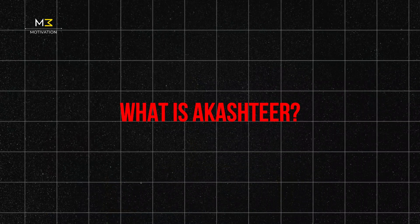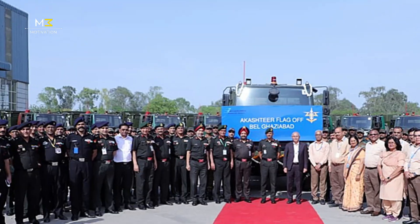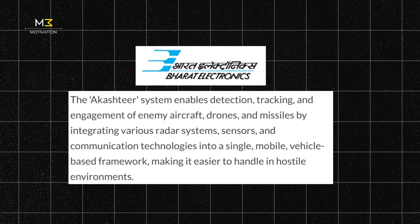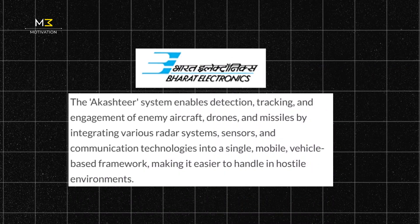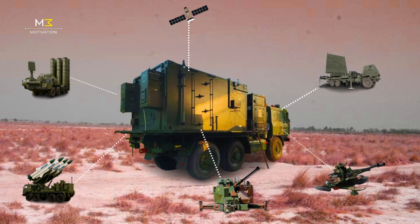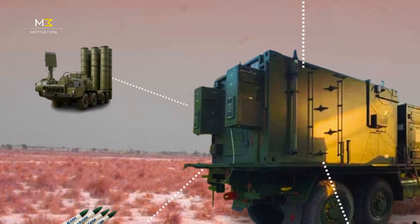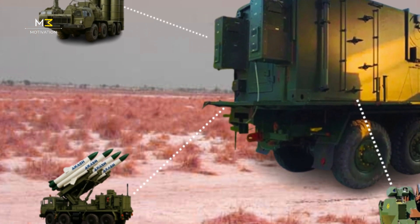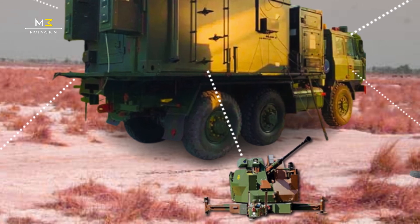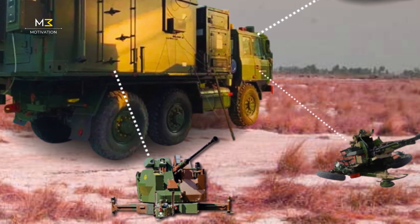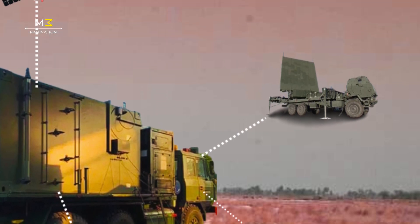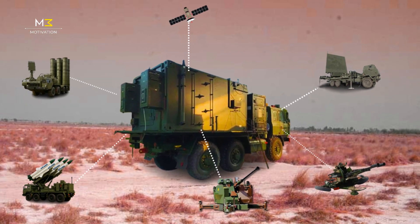What is Akash TIR? Akash TIR is an AI-driven air defense automation system developed by Bharat Electronics Limited (BEL). It integrates everything from long-range missile systems like the S-400 to Akash medium-range missiles, anti-aircraft guns like the L-70 and ZU-23, and a range of military and civilian radars into one unified intelligent network.